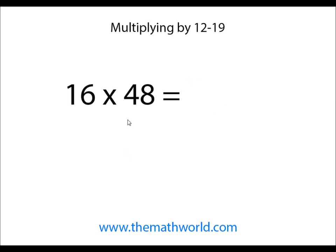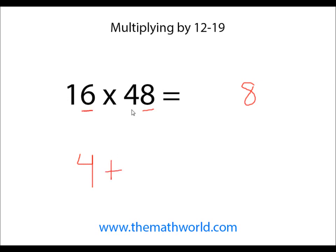The next example we're going to look at is 16 times 48. We're going to do the same thing as before. We're going to do 6 times 8, and that is 48. We're going to write down 8. This time we're going to carry our 4, so we're just going to write down 4 right here.